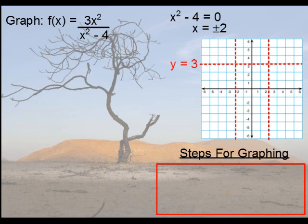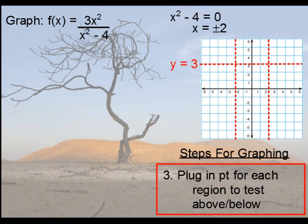Now the third step is that now we need to plug in a point for each region to see whether or not the graph is going to lie above the horizontal asymptote or below. How about we test in this region first? This requires an old-fashioned t-chart. And just like you learned when you first learned how to graph, we're going to be plugging in a few points. A point in this region that we want to try is anything that is west of this asymptote.